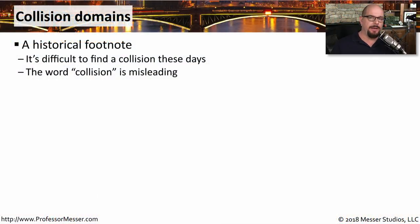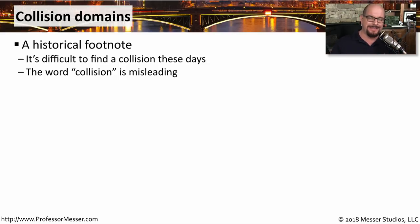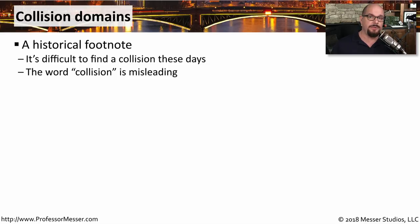When half-duplex ethernet networks were all the rage, we had to be very concerned about collision domains. These days, it's hard to find a collision domain because we use full-duplex ethernet. The term collision is a bit misleading — if you're driving a car, a collision is something you never want to occur. But on a half-duplex ethernet network, a collision is simply the normal process that occurs when people are trying to communicate, and it's perfectly expected.